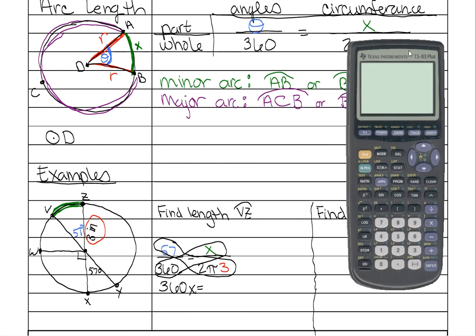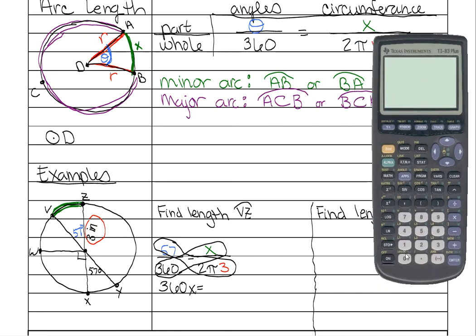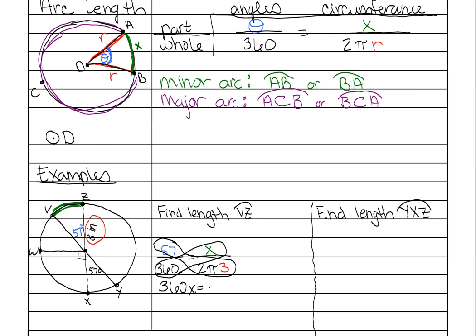You're just going to leave it as pi like it was a variable. So what that means is you're going to do 57 times 2 times 3. You're not going to do pi. And it's 342.